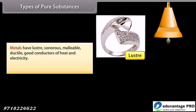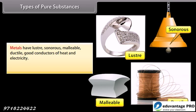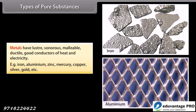Metals have lustre, are sonorous, malleable, ductile, and good conductors of heat and electricity. Examples include iron, aluminum, zinc, mercury, copper, silver, gold, etc.